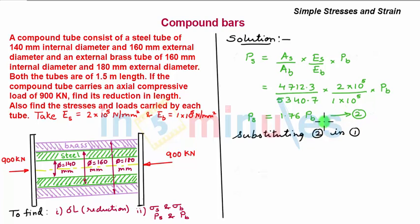Upon substituting equation 2 into equation 1, I get 1.76 PB plus PB equals minus 900 kilonewtons.